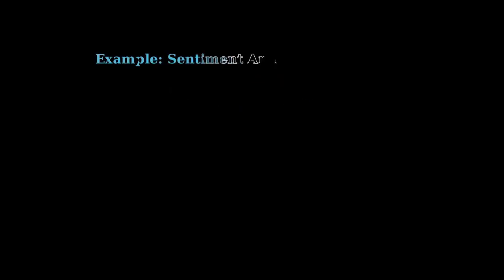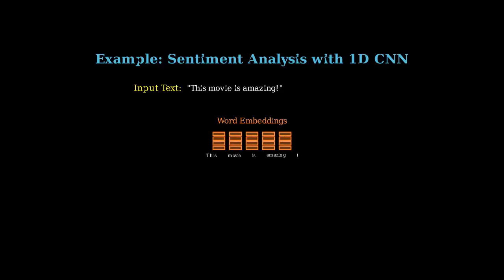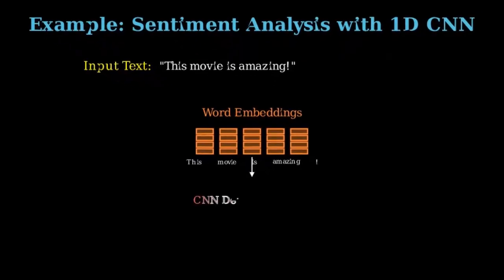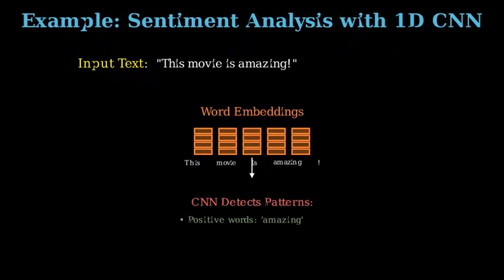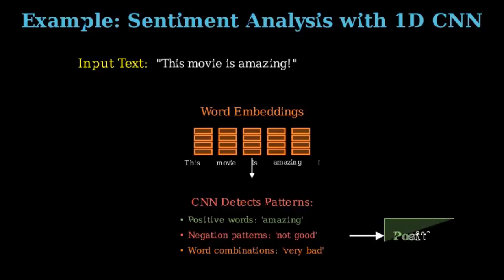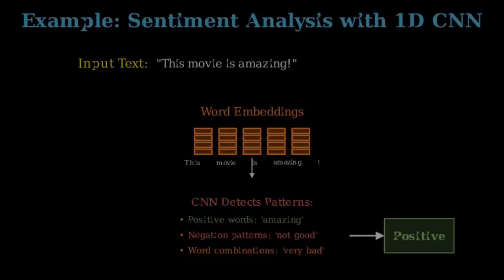Other than detecting anomalies, we can also do sentiment analysis with 1D CNNs, although it is less common, but it could be done. We create word embeddings, and those embeddings could be passed to the CNN detector, which detects positive, negative, and word combinations, which results in either positive or negative sentiment.